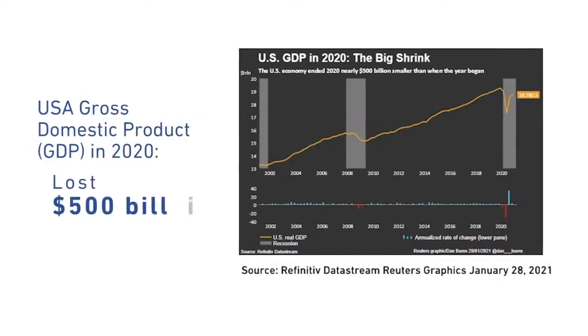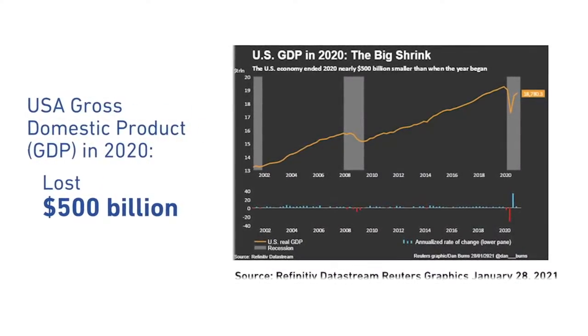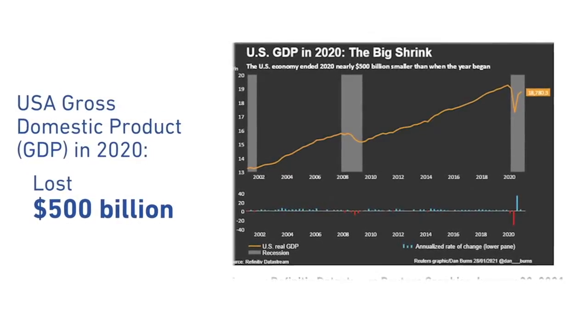What effect did all these things have on a country's gross domestic product, especially in the US? The GDP is usually a good indicator of the economy because it's the value of products and services produced in a country. In the year 2020, the GDP in the US went down by about $500 billion — in 2019 it was $21.43 trillion — so it went down by $500 billion.